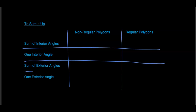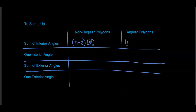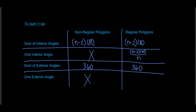Let's make a summary table. The sum of the interior angles of both regular and non-regular polygons is (n minus 2) times 180. To find one interior angle of a non-regular polygon, we cannot — there's no formula. But for a regular polygon, we use (n minus 2) times 180 divided by n. The sum of exterior angles is always 360, for both regular and non-regular polygons. For one exterior angle, there's no formula for non-regular polygons, but for a regular polygon it's 360 divided by the number of sides.